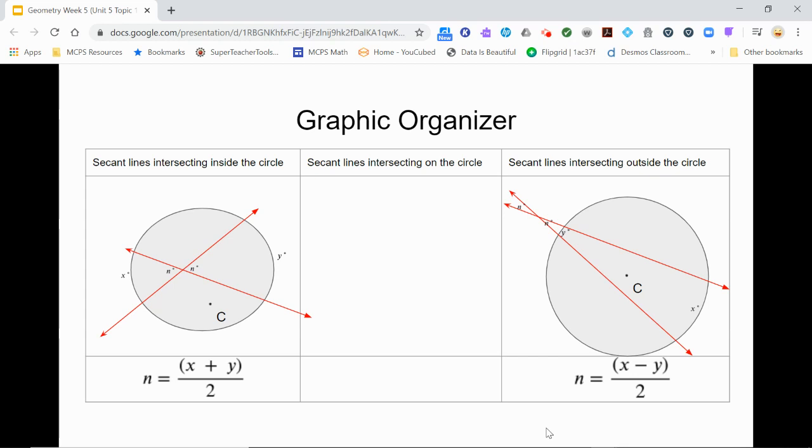And we also remember from last week that an angle on the circle is called an inscribed angle and its measure is half the measure of the intercepted arc.